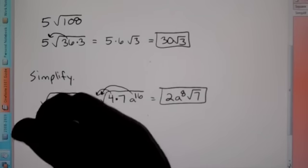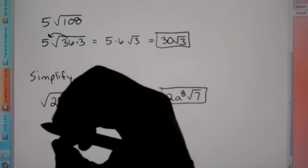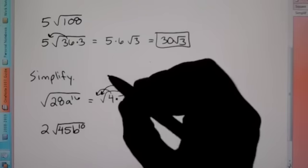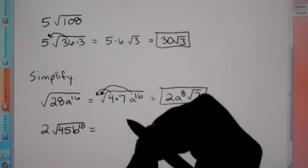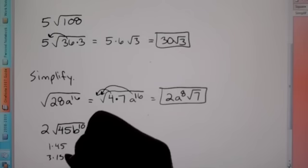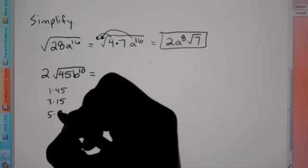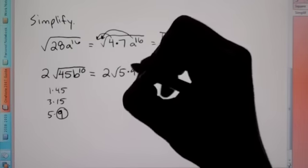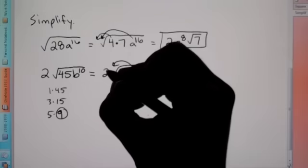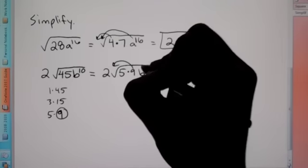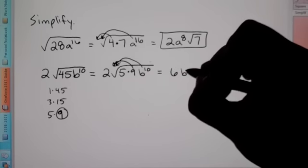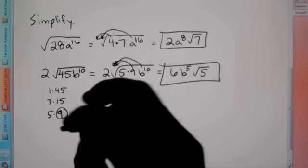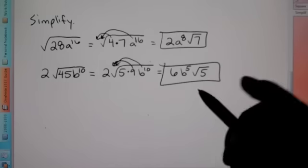Next: 2√(45b^10). The number 45 is not a perfect square; its factors include 1×45, 3×15, and 5×9 — and 9 is our perfect square. So we rewrite it as √(9 × 5 × b^10). The square root of 9 is 3, and there's already a 2 out front, so 2×3 = 6. Cutting the exponent of b^10 in half gives b^5. Our answer is 6b^5 √5.